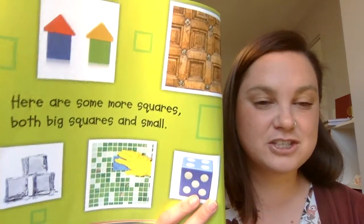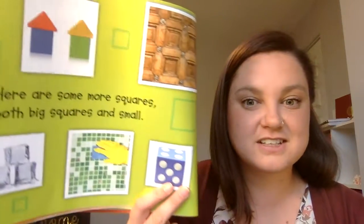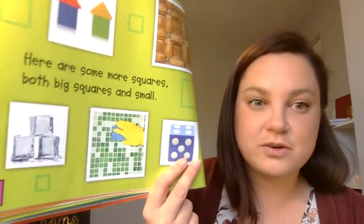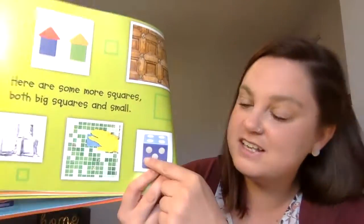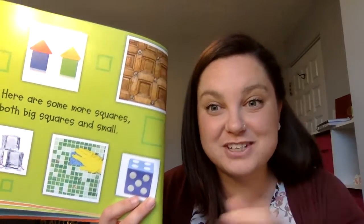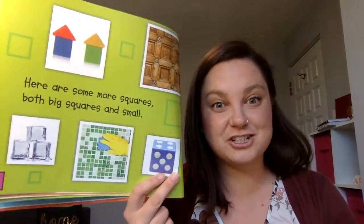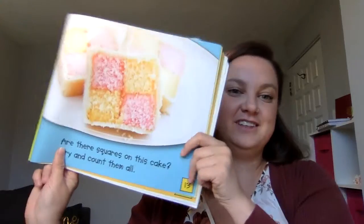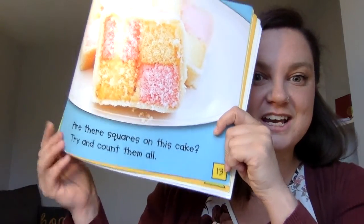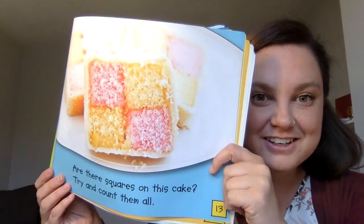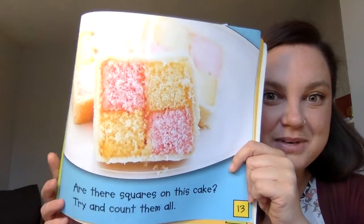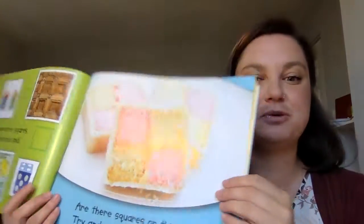Some ice cubes and blocks. A dice. When it's in this kind of shape, we call it a cube — when there's a bunch of squares like that together, it's a cube. Are there squares in this cake? Try and count them all. Look at that yummy cake made up of squares!